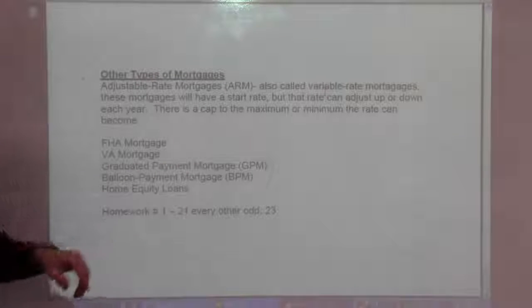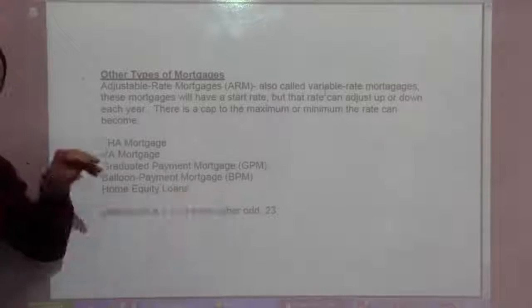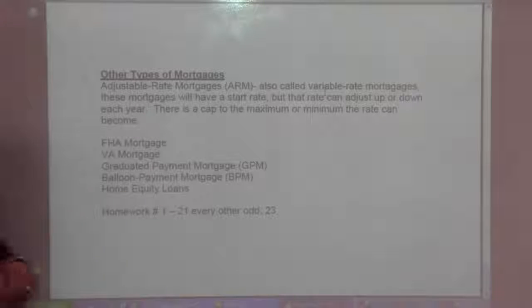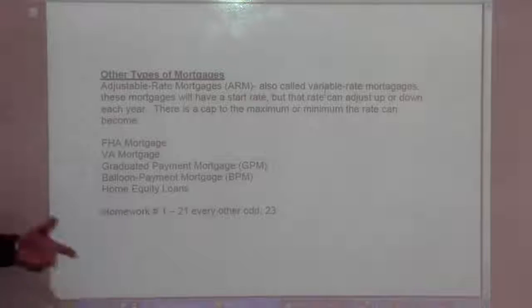Graduated payment mortgage, that means your payment will go up over time. Balloon payment mortgage, you want to stay away from these, they'll be low for a long time but they'll be big and I don't know if they even exist anymore. And home equity loans, that's when you borrow against the equity in your home and you have to pay that off.